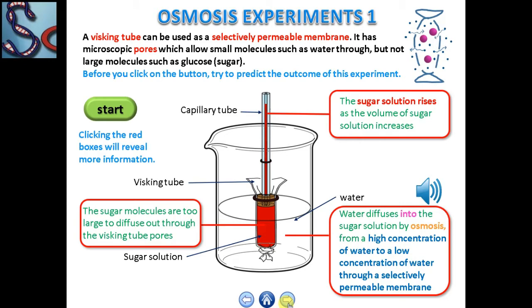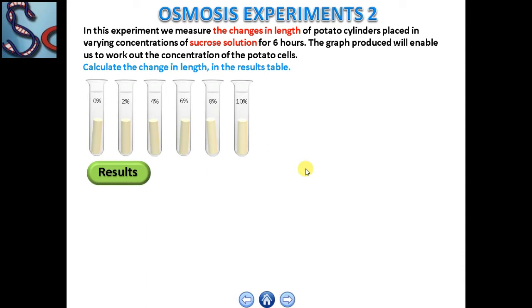This is osmosis experiment number 2. In this experiment, we measure the changes in length of potato slenders placed in varying concentrations of sugar solution for about 6 to 8 hours. The graph produced will enable us to work out the concentration of the potato cell.